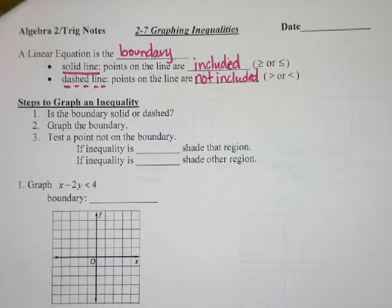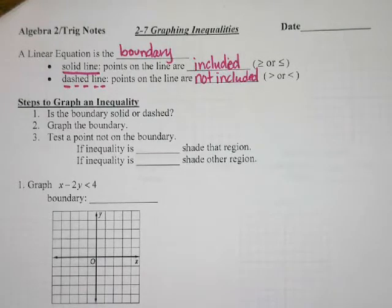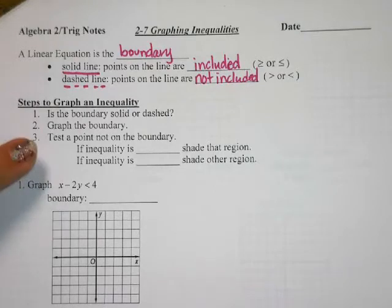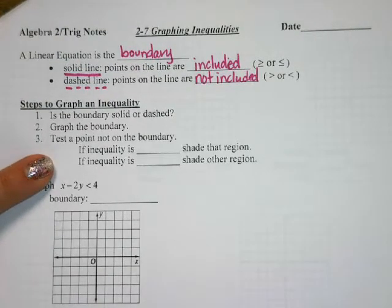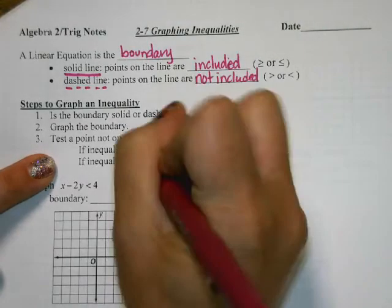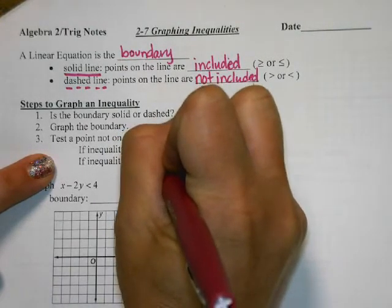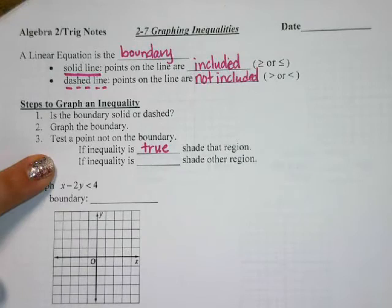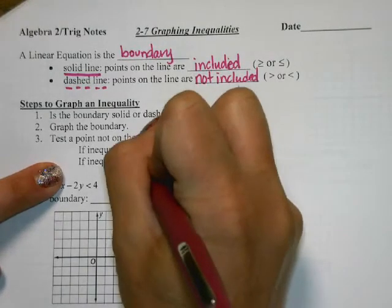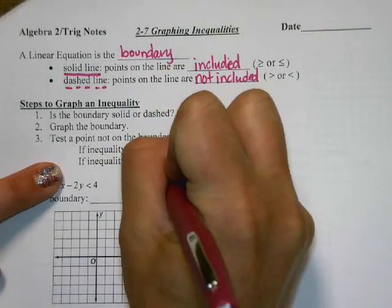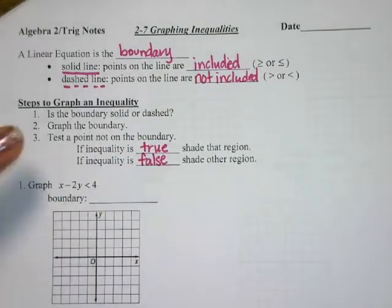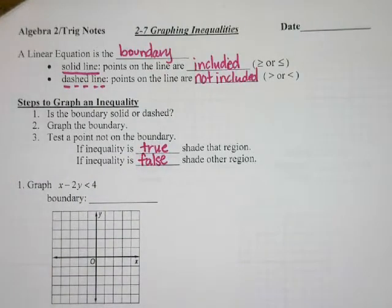When we graph it on the coordinate plane, we decide: is the boundary going to be solid or dashed? We're going to graph the line, and then we have to do some shading. Test a point not on the boundary. If the inequality is true, shade that region. If the inequality is false, shade the other region. I'm going to show you a trick here in just a second.